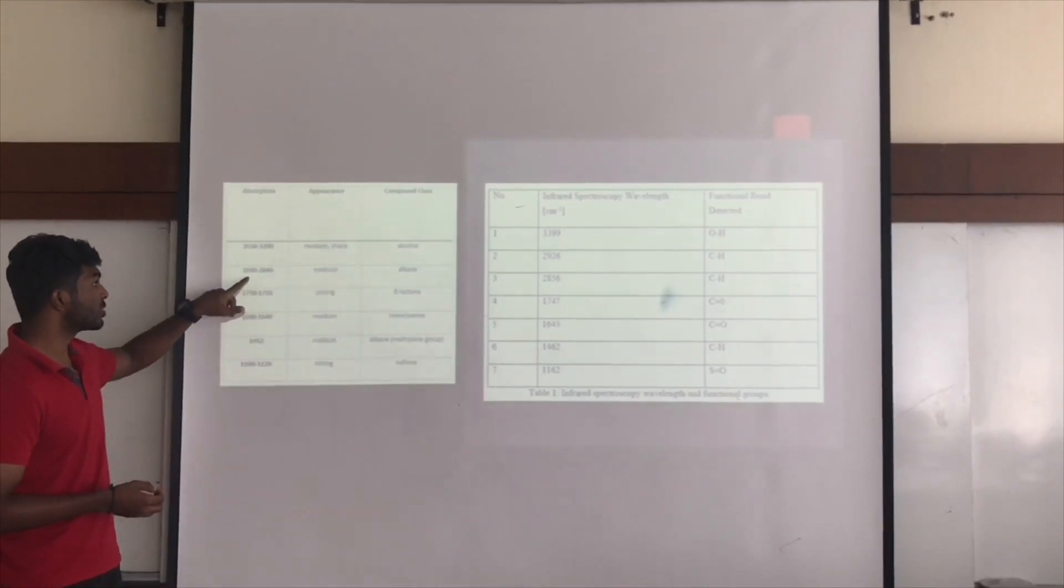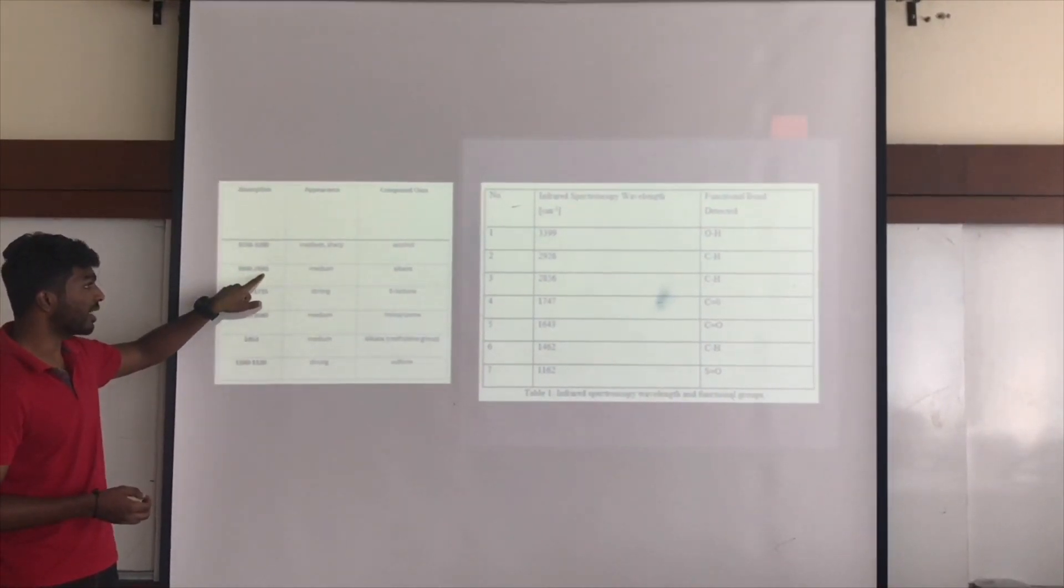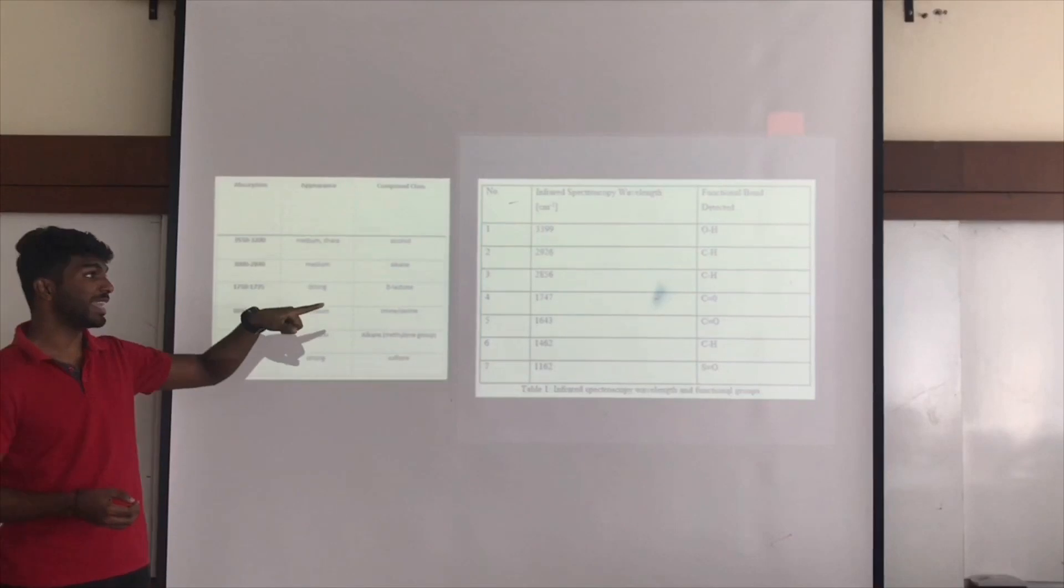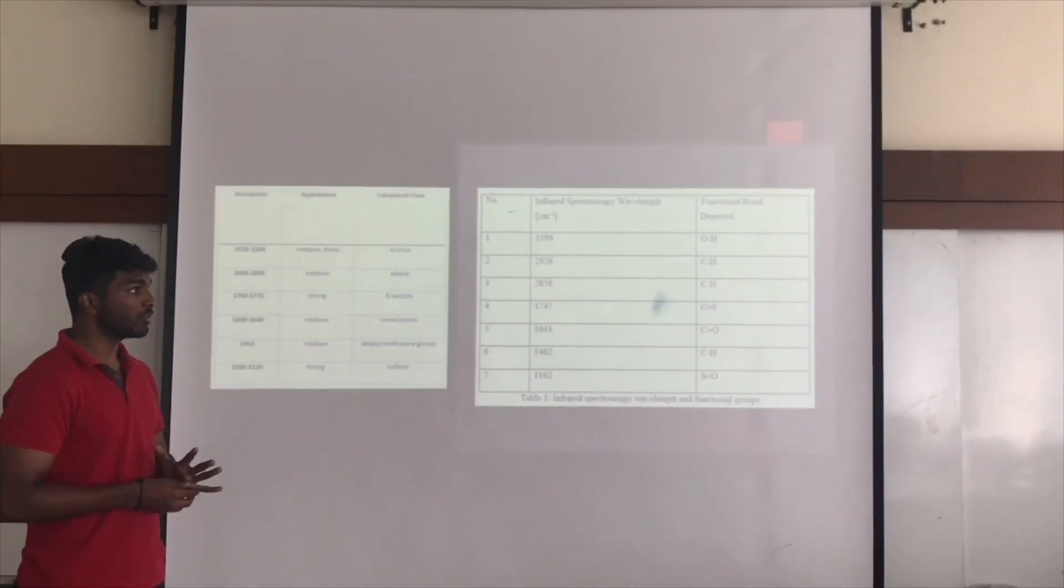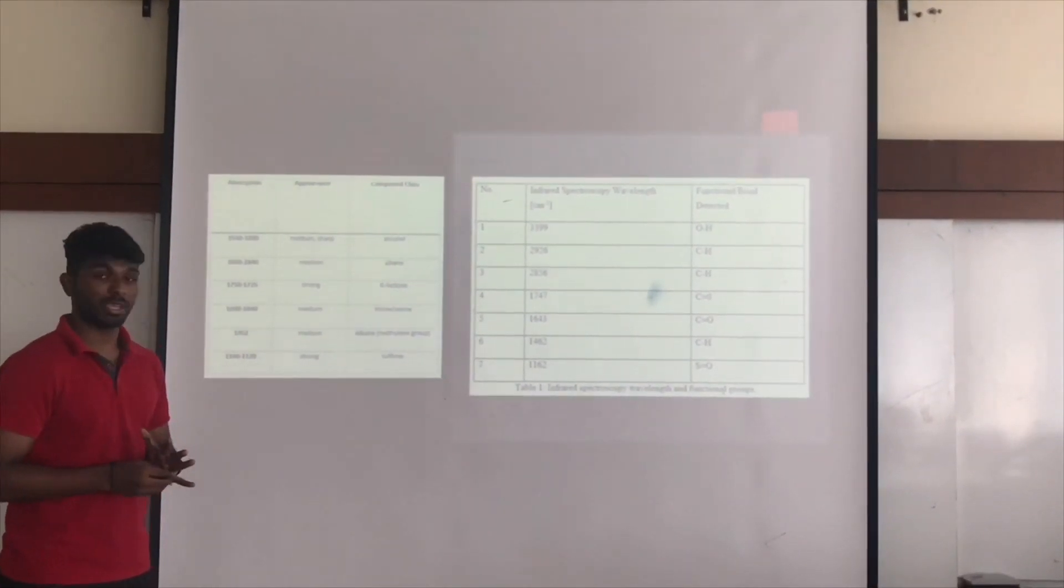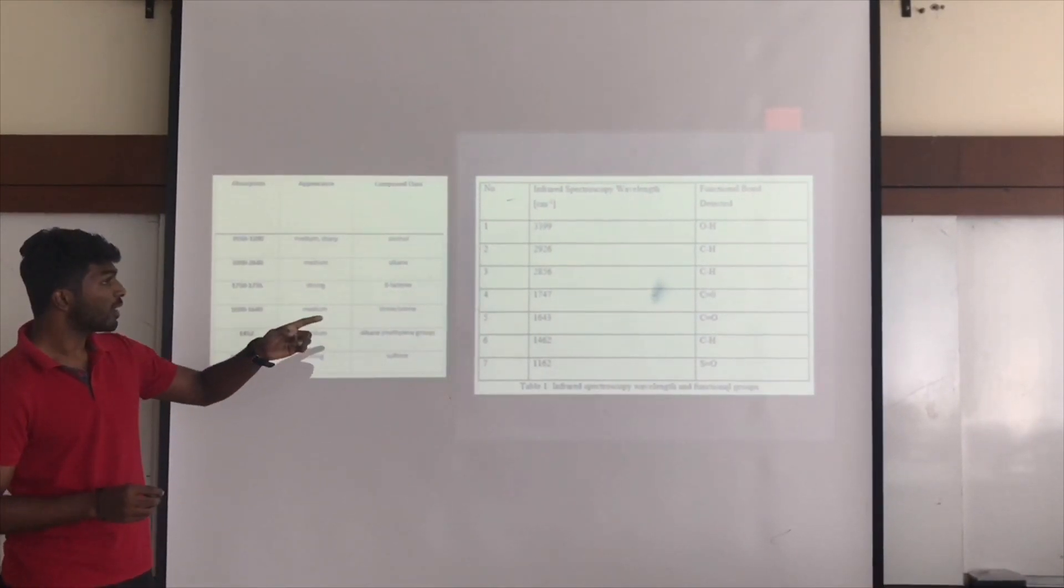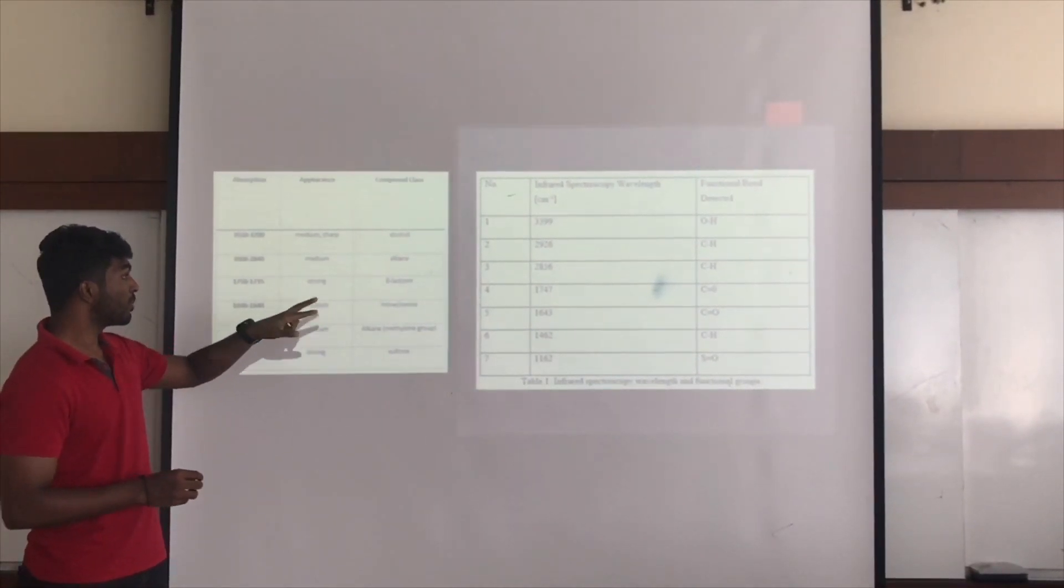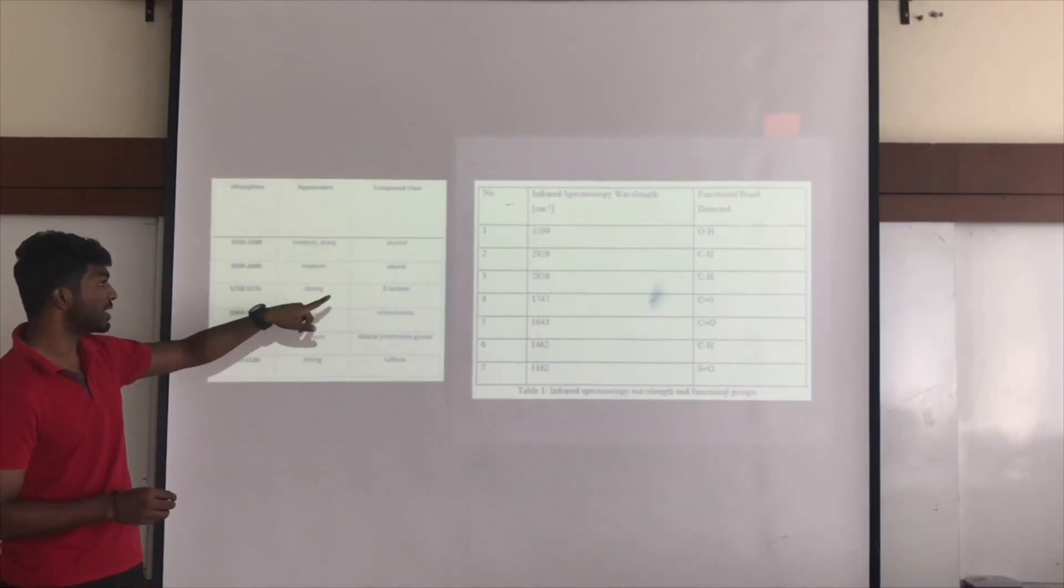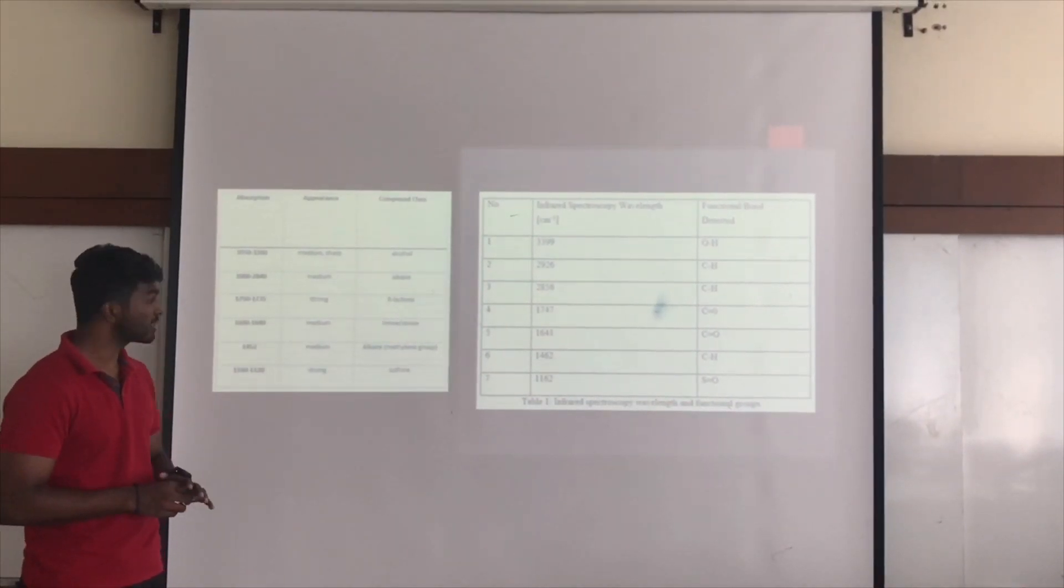Followed by 3000 to 2810, it shows alkane C-H bond, a carbon group. It's an organic bond. C-H bond has two different ranges: one is alkane compound class, another one is lactone compound class.